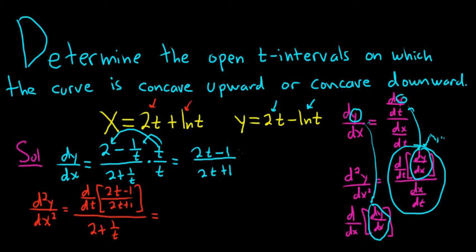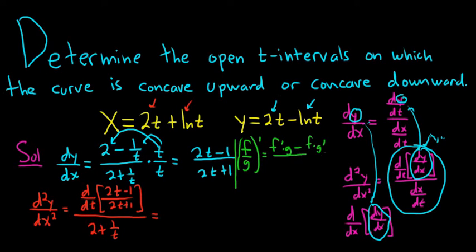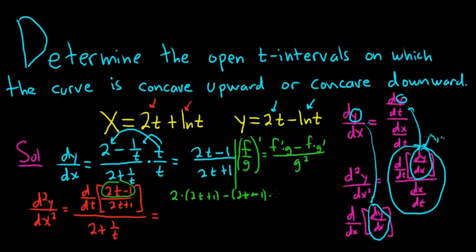Here's how I do the quotient rule: if you have f over g and you take the derivative, f is the top piece and g is the bottom. It's the derivative of the top times the bottom, minus the top times the derivative of the bottom, all over the bottom squared. So here f is 2t minus 1 and g is 2t plus 1. The derivative of the top is 2, times the bottom, minus the top (2t minus 1) times the derivative of the bottom (2), all over (2t plus 1) squared.